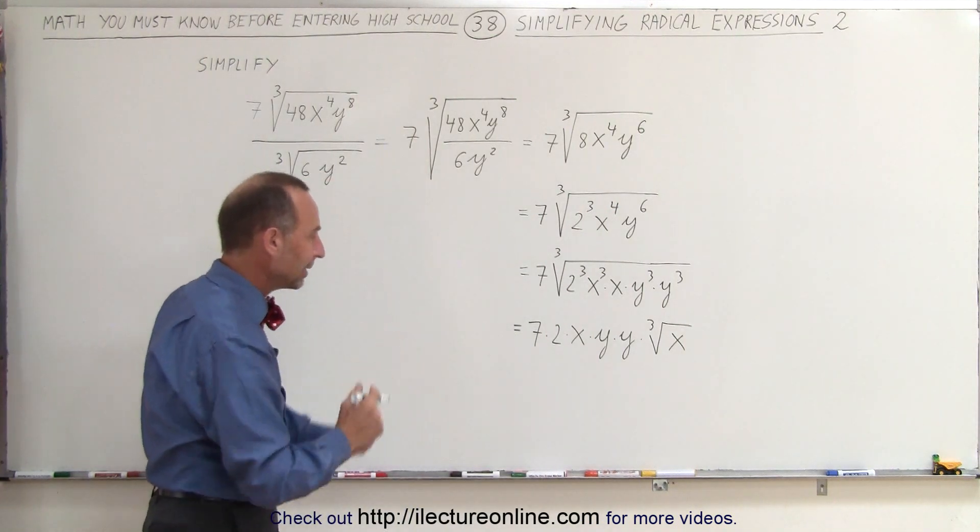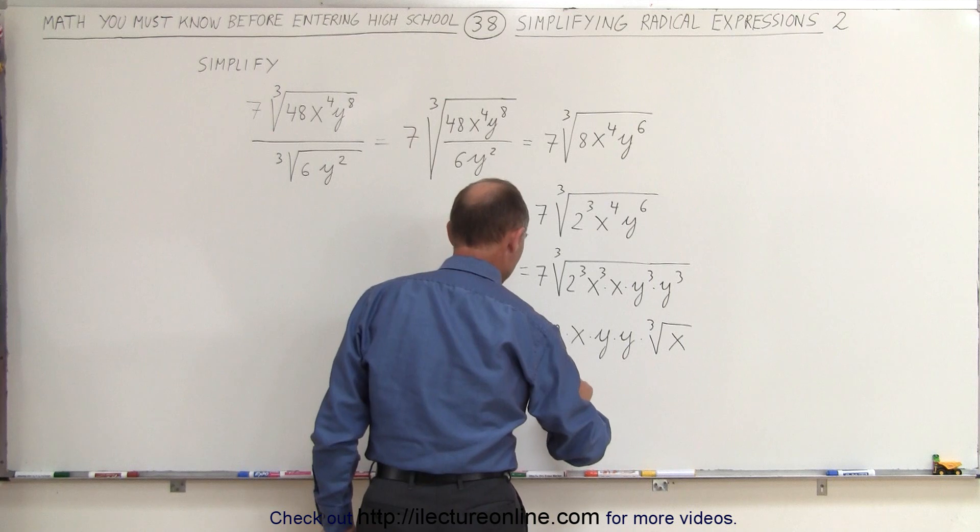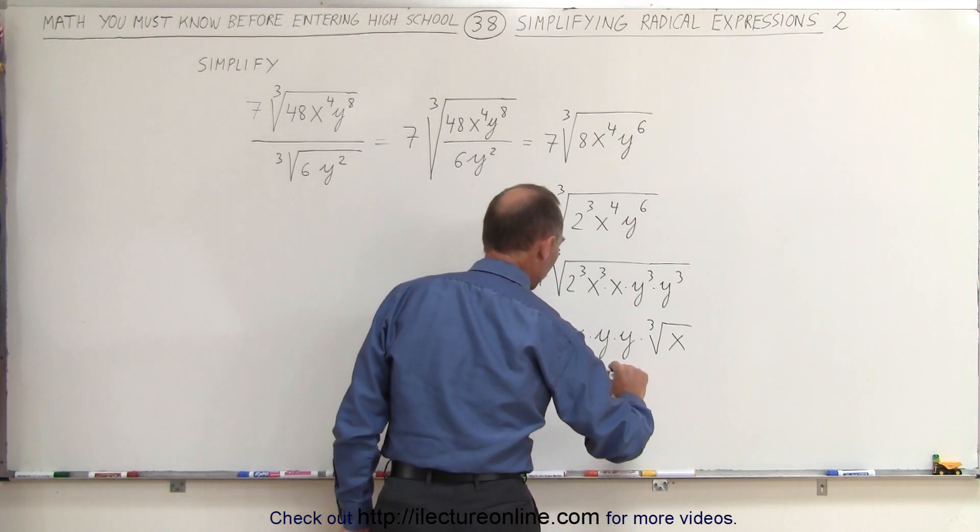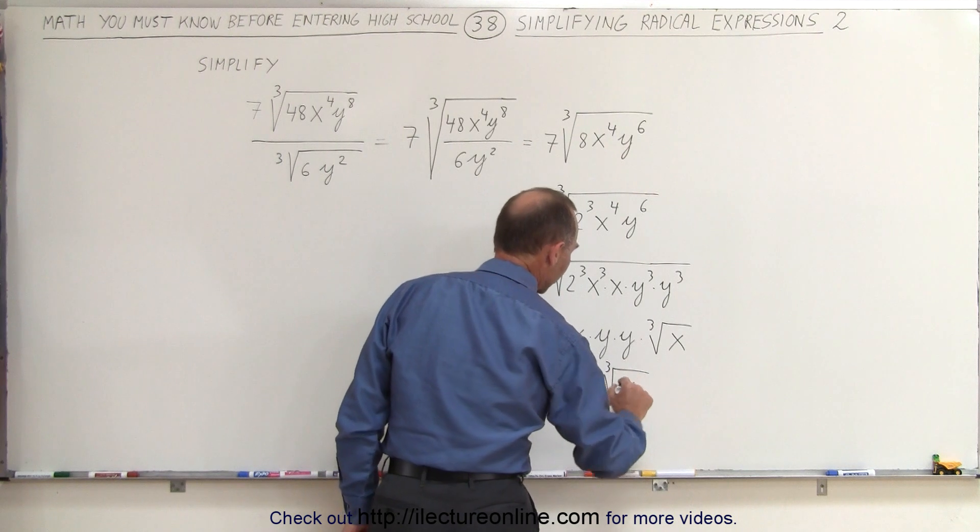And of course, we combine these, and we get the following: 14 times x times y squared times the cube root of x.